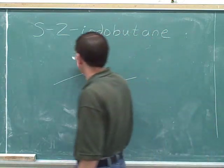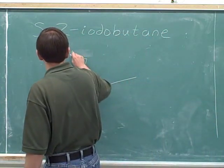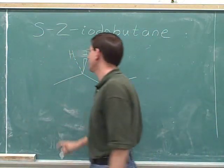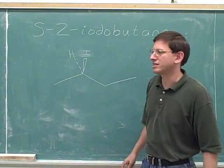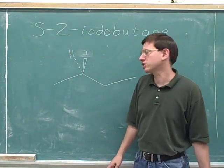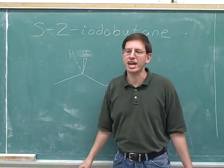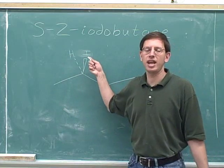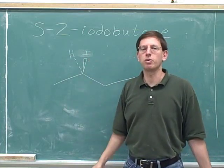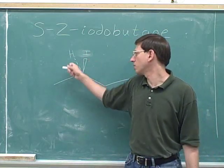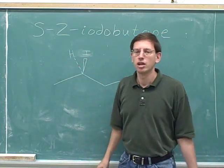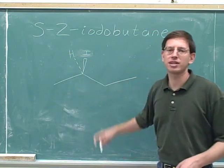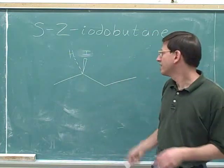The easiest guess is to put the hydrogen on the dash, because we know it's always easiest to find the configuration if the number four priority is on the dash. Since we don't know where the hydrogen goes anyway, we might as well guess that it's going to go on the dash. So we've guessed what it looks like, and now we can see whether we're right.